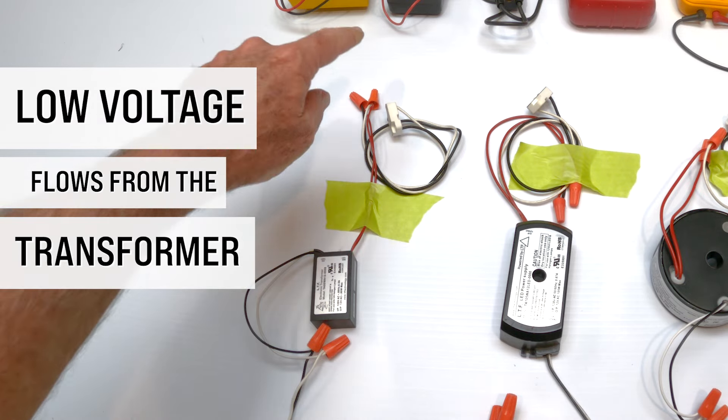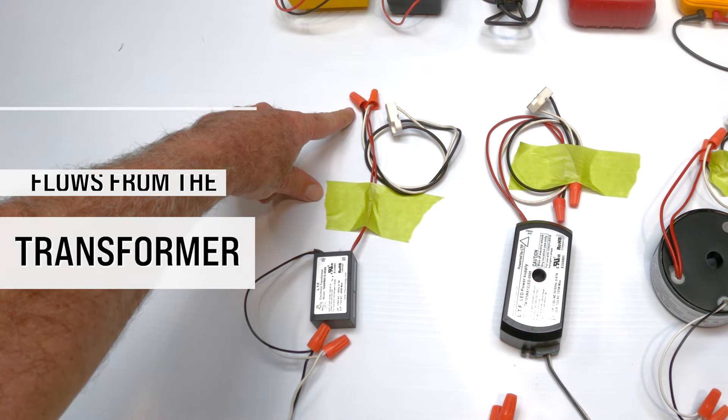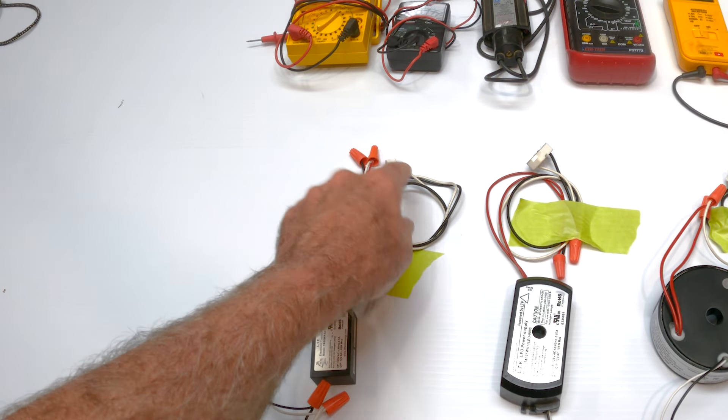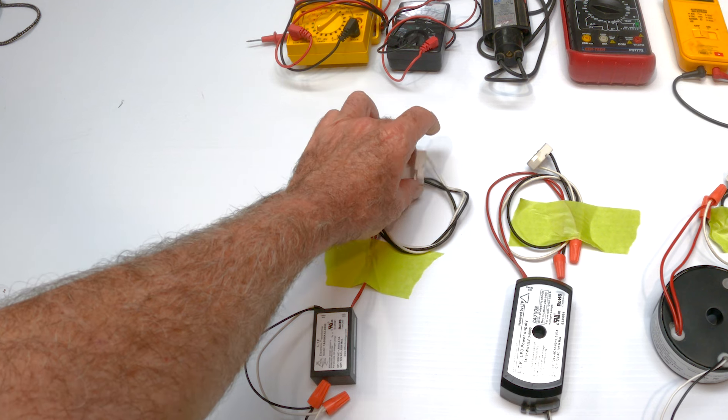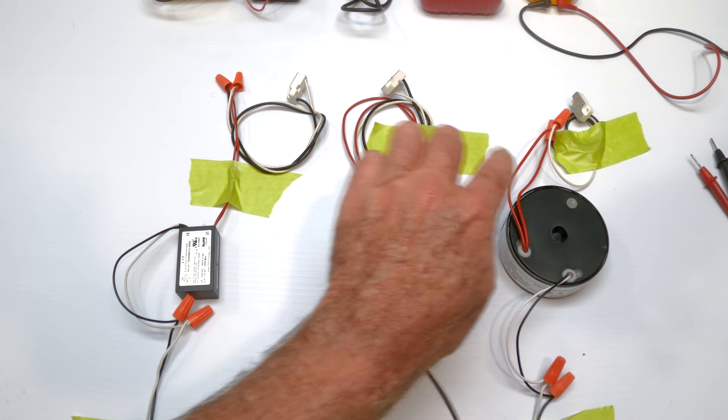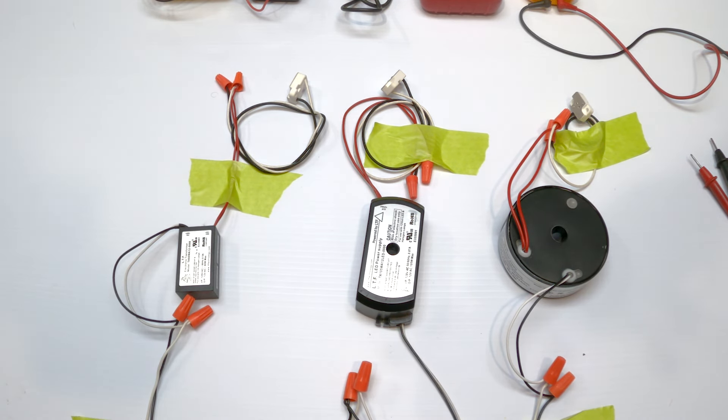From the transformer, the 12 volts goes out, again, wire nuts, into a socket. And I have the socket right here. And this is replicated here on all three transformers to give you an idea of what we have. It's really, really simple.